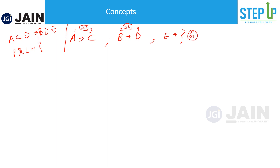Same thing: A C D became B D E. A plus one is happening, C plus one is happening, and D plus one is happening. Similarly, P plus one gives Q, Q plus one gives R, and L plus one gives M — so the answer would be Q R M.